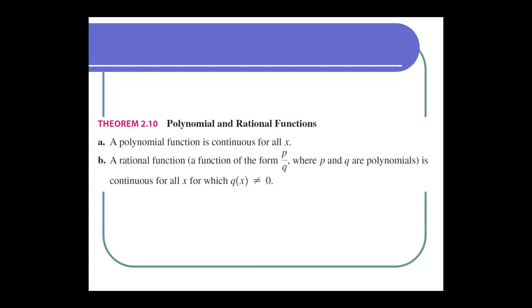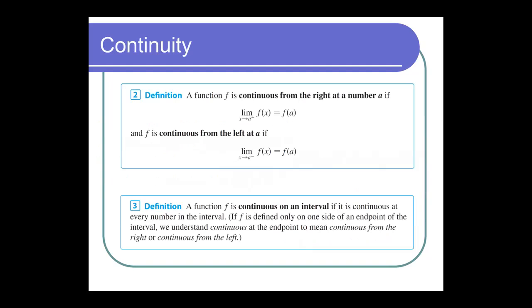A polynomial requires integer powers — x to the negative one or x to the one-half are not polynomials. Rational functions are polynomials over polynomials. A function is continuous from the right at a if the limit as x approaches a from the right of f(x) equals f(a), and similarly from the left. A function is continuous on an interval if it's continuous at every number in that interval.